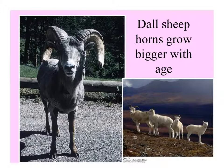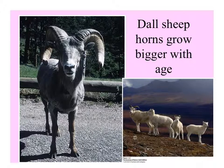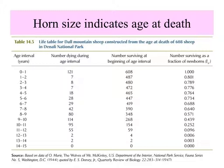In Dall sheep, which grow in high mountain places, their horns grow bigger as the males grow older, adding a new ring each year. This life table was constructed by finding dead sheep, figuring out their age, and looking at the number dying during each age interval. From this, you can get a picture of how long these sheep live under natural circumstances. This is not a cohort life table, but rather a static one — looking at the age of death at one point in time.